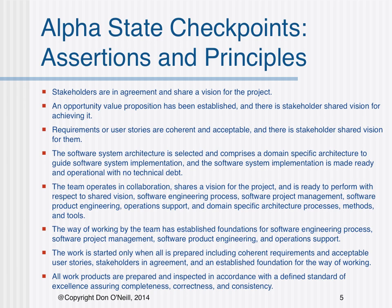Number three, requirements and user stories are coherent and acceptable, and there is a stakeholder shared vision for them. Number four, the software system architecture is selected and comprises a domain-specific architecture to guide software system implementation, and the software system implementation is made ready and operational with no technical debt. Number five, the team operates in collaboration, shares a vision for the project, and is ready to perform with respect to shared vision, software engineering process, software project management, software product engineering, operations support, and domain-specific architecture processes, methods, and tools.